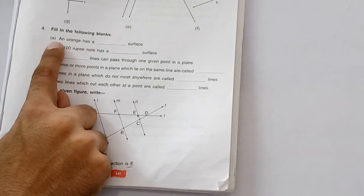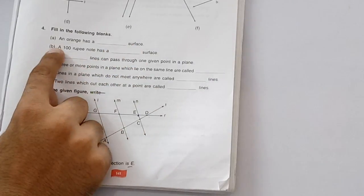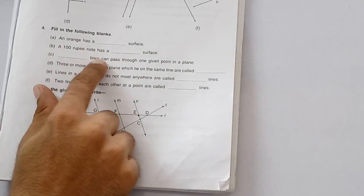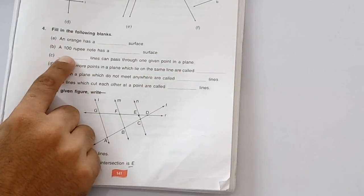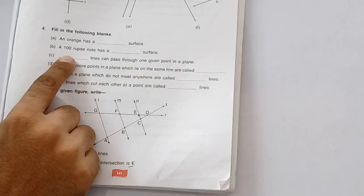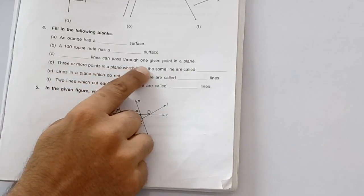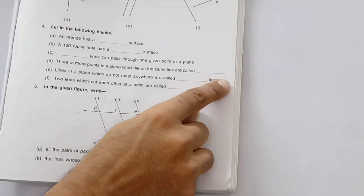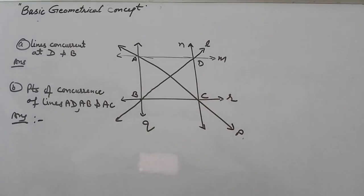Fill in the following blanks. An orange has a curved surface. A hundred rupee note has a flat surface. Unlimited lines can pass through one given point in a plane. Three or more points in a plane which lie on the same line are called collinear points. Lines in a plane which do not meet anywhere are called parallel lines. Two lines which cut each other at a point are called intersecting lines.